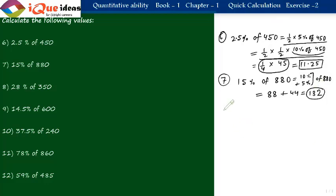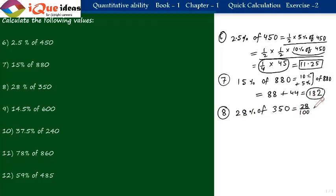Question 8: 28 percent of 350. You can break it as 20 plus 8 percent or 25 plus 3 percent. Since 28 is not a direct multiple of 5 or 10, use the fundamental method: 28 by 100 into 350. Cancel zeros; 5 cancels into 35 seven times, and 2 cancels into 28 fourteen times. The answer is 14 into 7, which is 98.